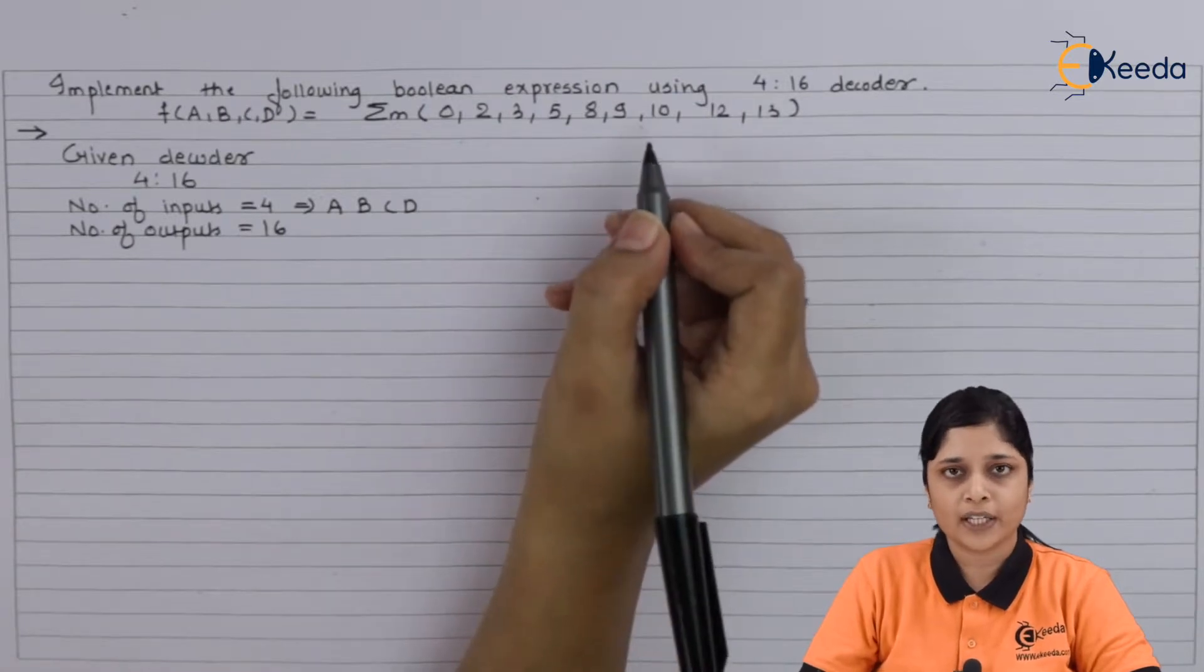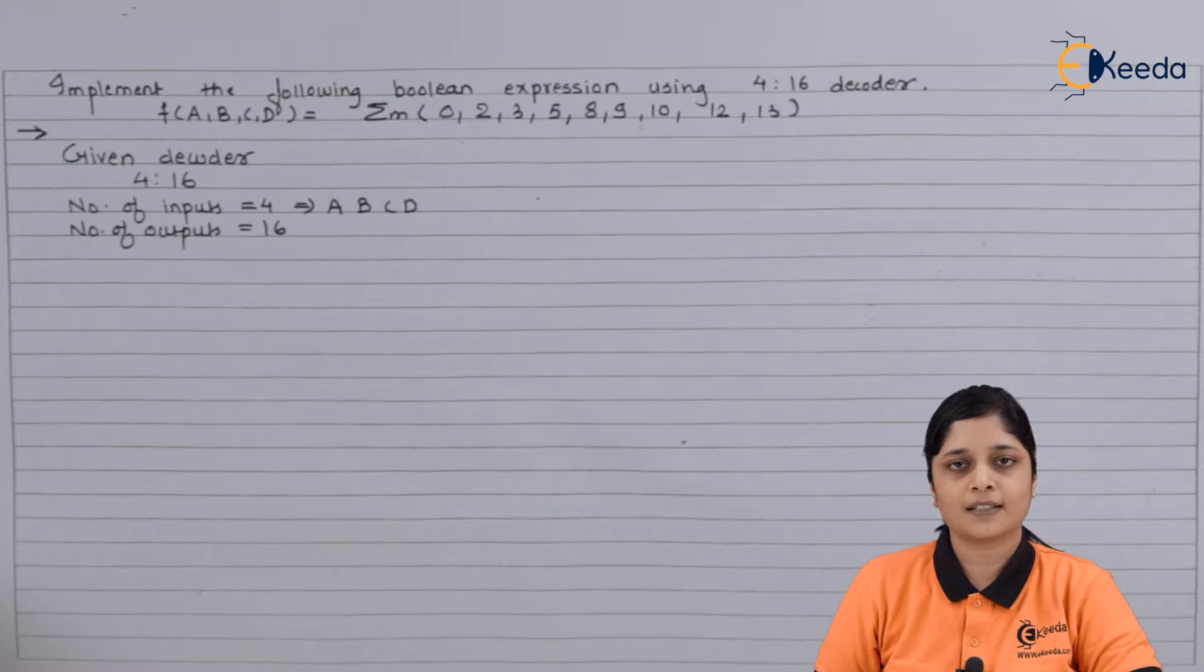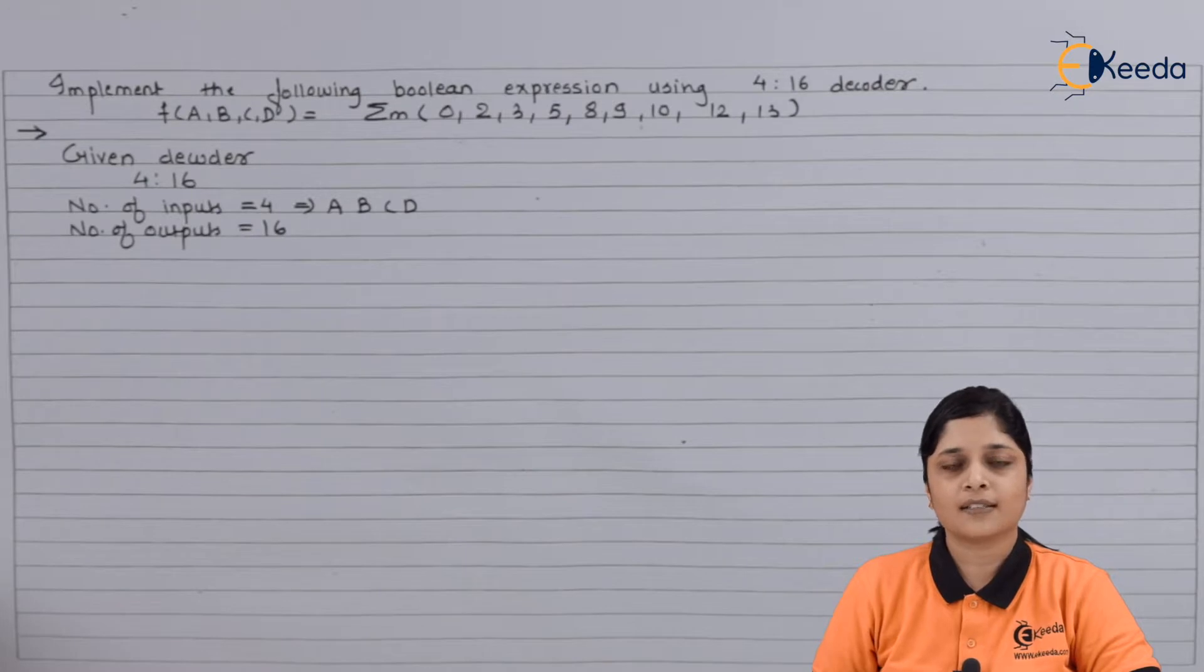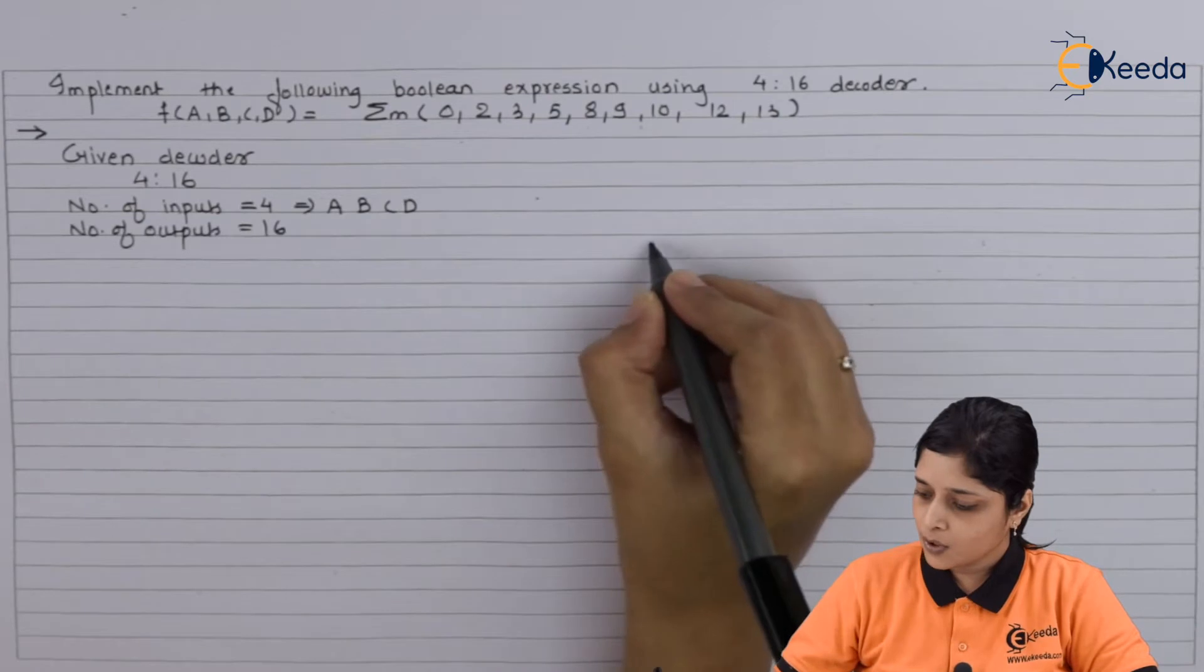So with the use of 4 to 16 decoder, you have to realize the given expressions. So let's start the realization. We will draw here the diagram.